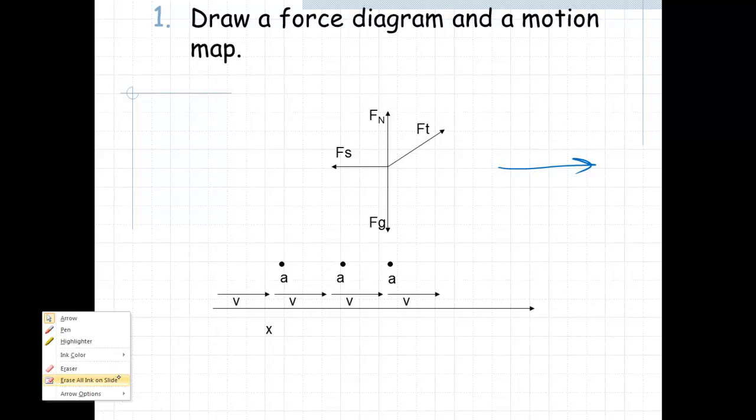Our motion map would look like this. We have constant velocity, so all the arrows point in the same direction and they're constant. We know they're constant because the problem tells us. We show that by having all of the arrows the same length. And because the velocity is constant, we know that the acceleration is zero. In this case, the acceleration is equal to zero because the velocity is a constant.